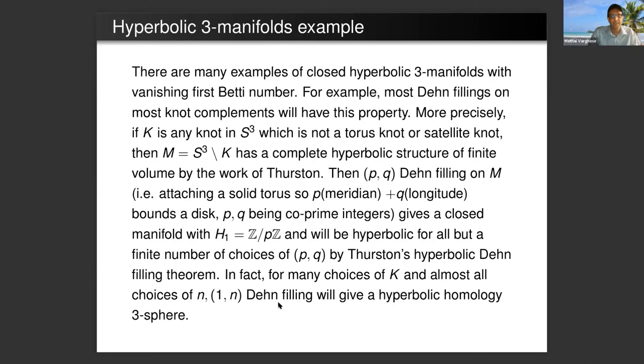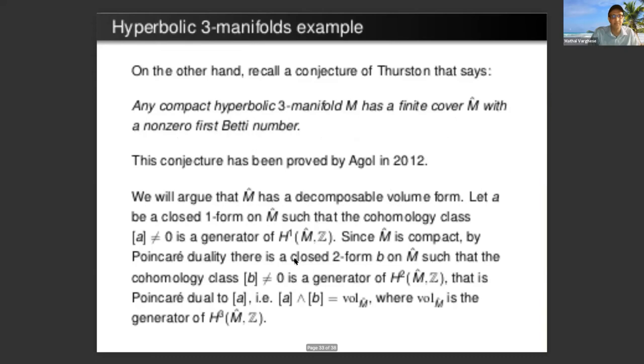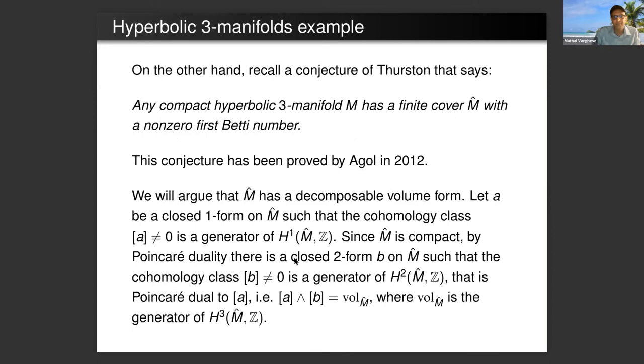One can do p,q Dehn fillings on M, attaching a solid torus which is p times meridian plus q times longitude that bounds the disk, p,q being coprime integers. This gives a manifold with the first homology being Z_p, and this will be hyperbolic for all but a finite number of choices of p and q by Thurston's hyperbolic Dehn filling theorem. In fact, for many choices of K and almost all choices of n, one subN Dehn filling will give a hyperbolic homology three sphere.